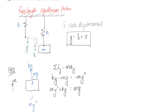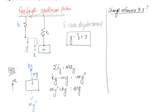Now let's look at what happens if we change our reference to x, measuring from the equilibrium position, rather than from y which was the free length. In order to do that, we can start by considering the equation relating x and y: y equals delta plus x. We can directly replace y in our equation, but we also need to replace y double dot. We get that by taking the derivative of this equation twice. Taking the first derivative with respect to time: the static displacement is a constant value so its derivative goes to zero.